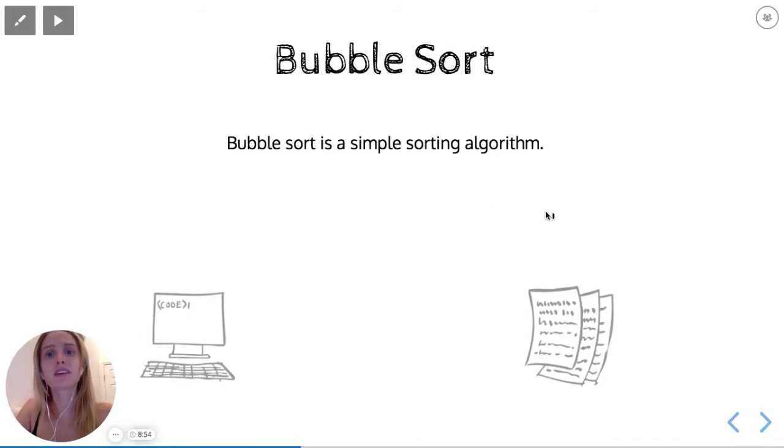Bubble Sort is a simple sorting algorithm. You might be wondering why do we need sorting algorithms? Well, when you have a ton of data, one of the main things algorithms need to do is sort all of that data into the proper order. And so that's what sorting algorithms do, and there's a couple of different sorting algorithms.